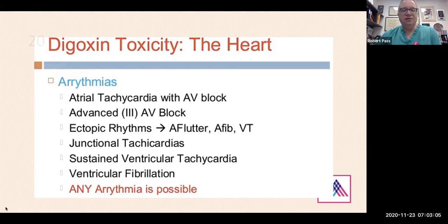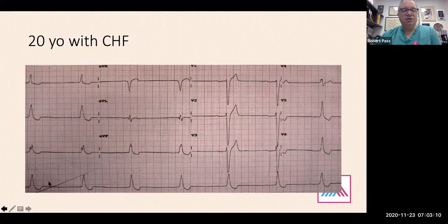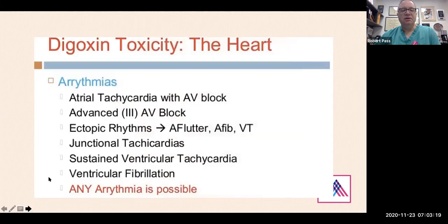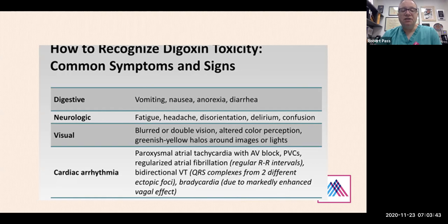This is a nice tracing of digoxin toxicity. We don't see it as much anymore because we don't use digoxin as much, and we don't load people with digoxin as we used to. Some of the signs and symptoms are vomiting, nausea, anorexia, and diarrhea — the most common being nausea and vomiting. You can have headache, fatigue, disorientation. The classic description is seeing yellow or green halos around images or lights.